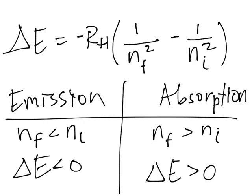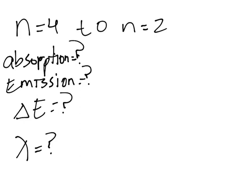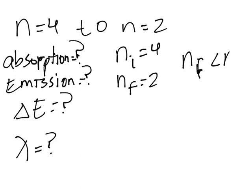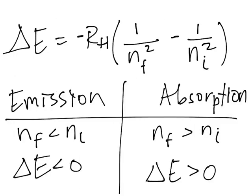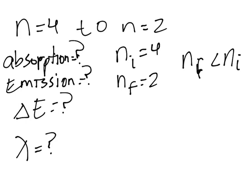Let's go back to our table. Emission means the n-f is less than n-i. We have that n-i is 4 and n-f is 2. So n-f is lower than n-i. That is emission.